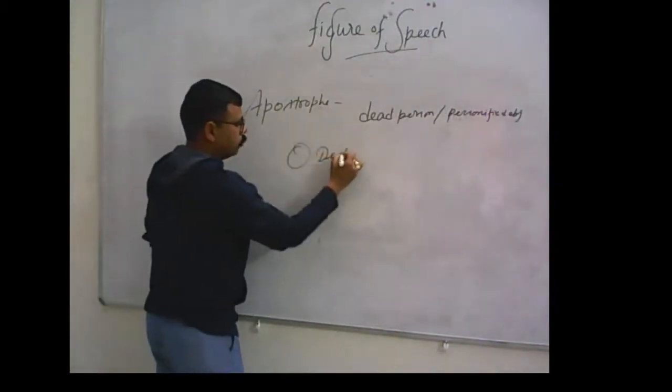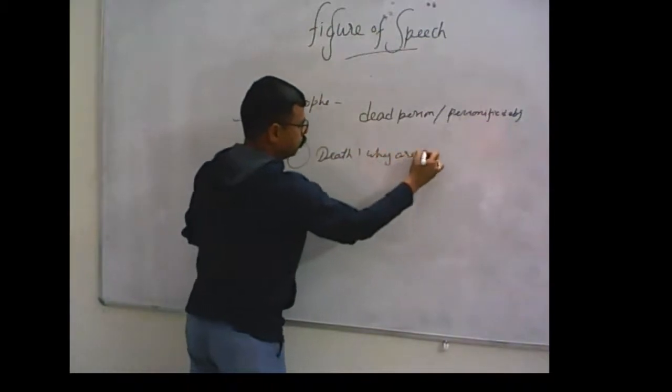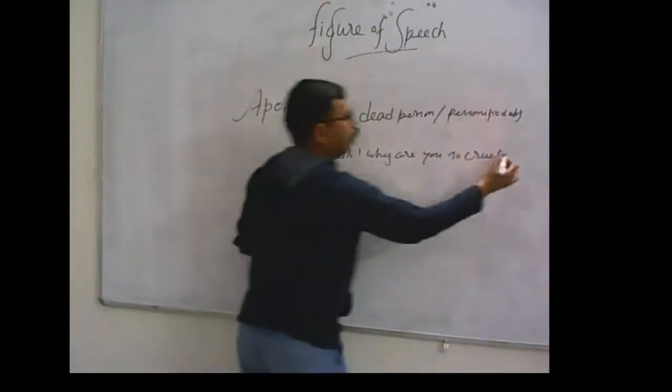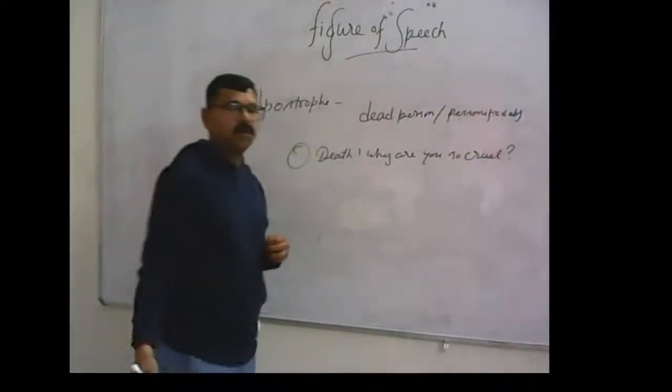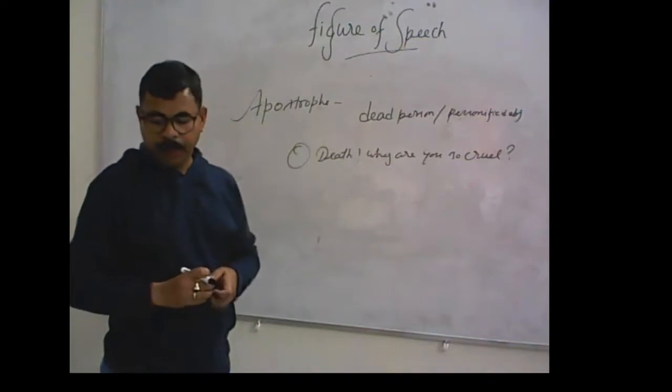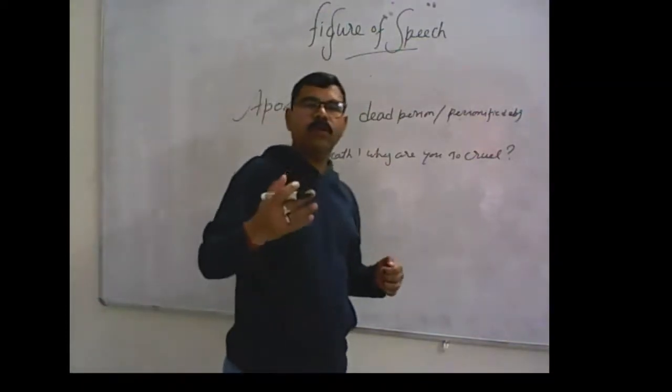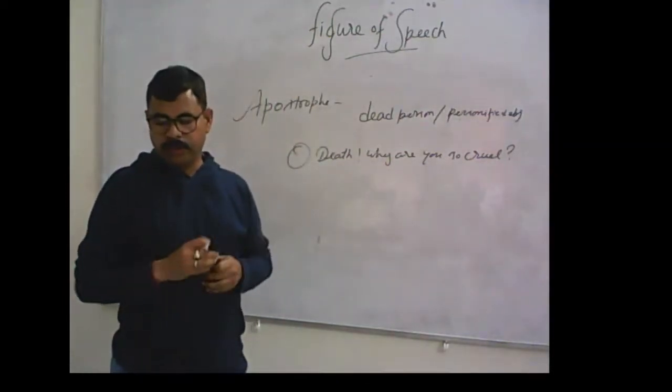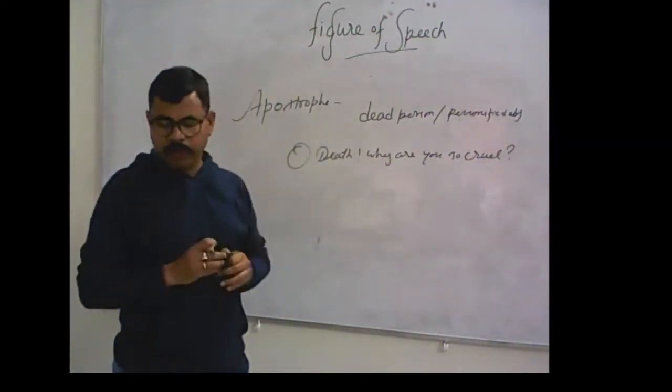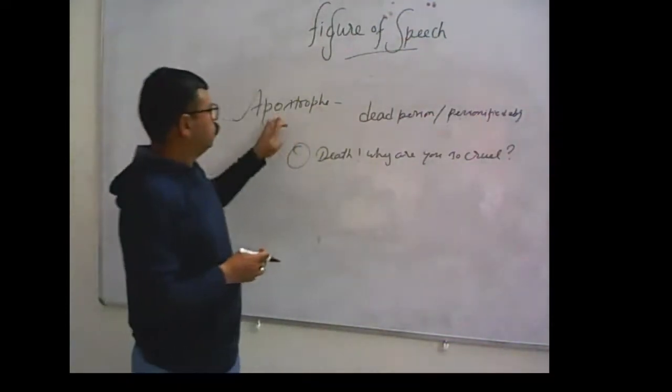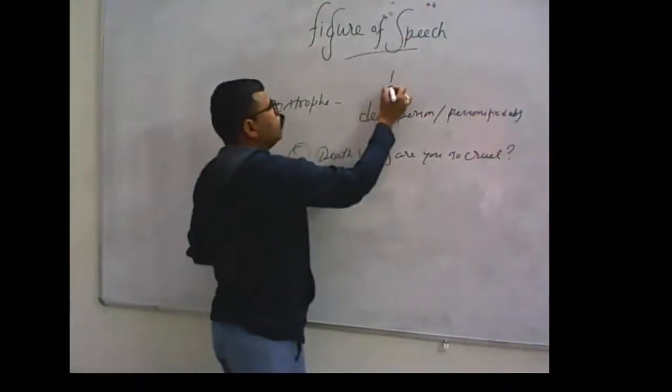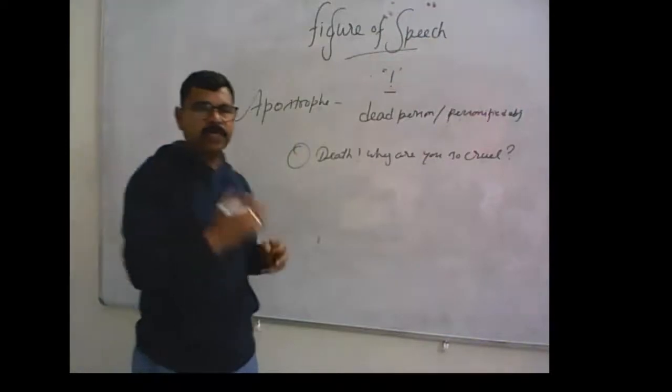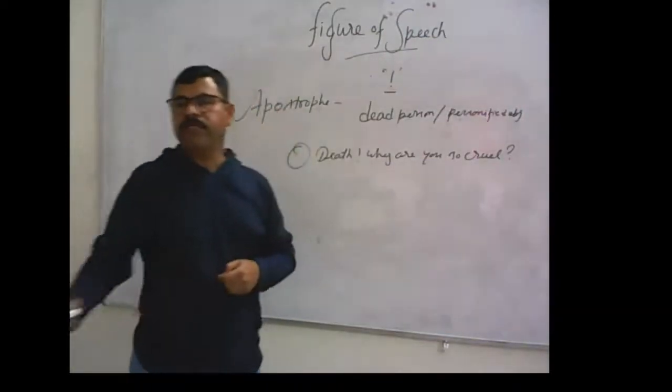For example, O death, why are you so cruel? In the same way, O world, my world, I know I come. It means addressing of such things that are personified or dead persons. It can be recognized by the apostrophe mark or exclamation mark. It can be identified in a sentence.